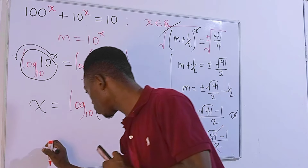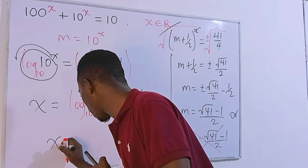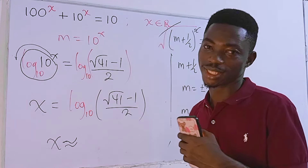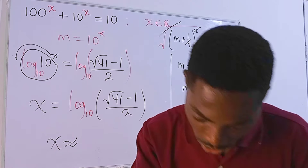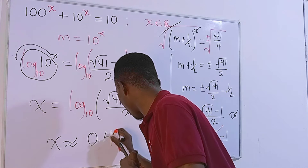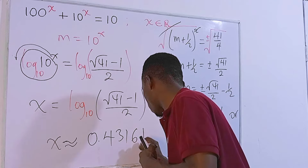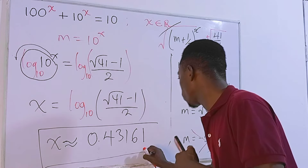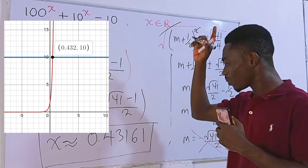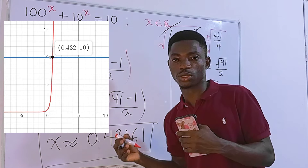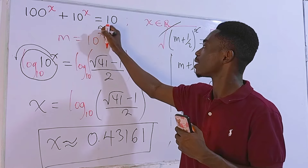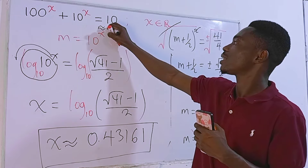That is the answer for x. Using a calculator, x is approximately equal to 0.43161. You can substitute this back into the original equation to verify you get approximately 10.